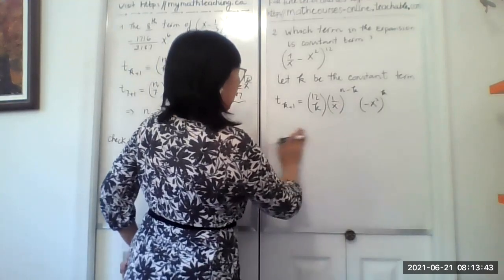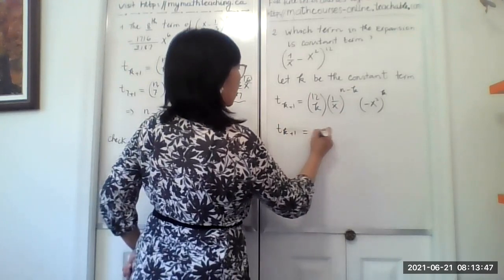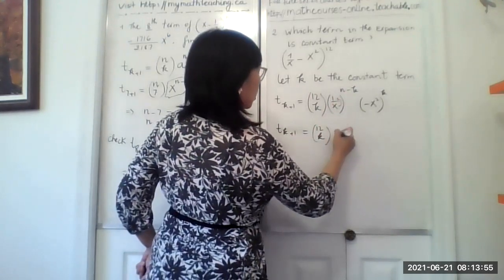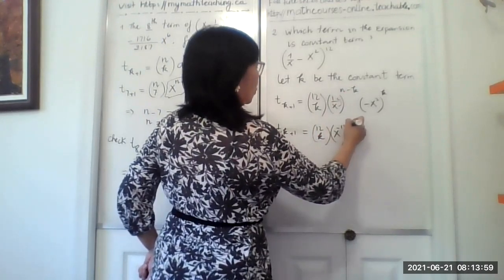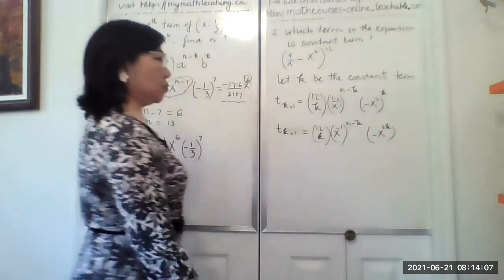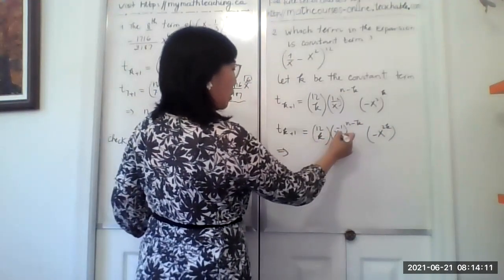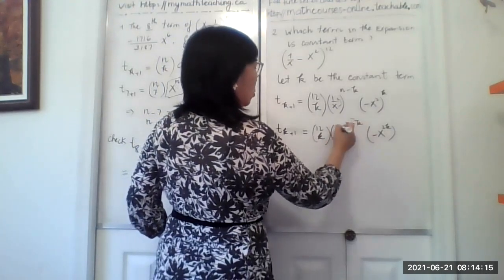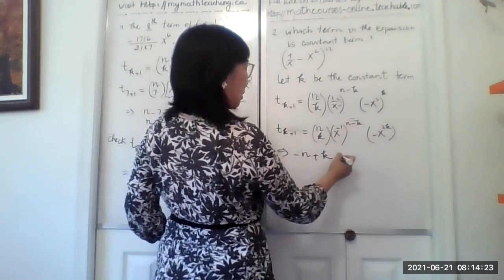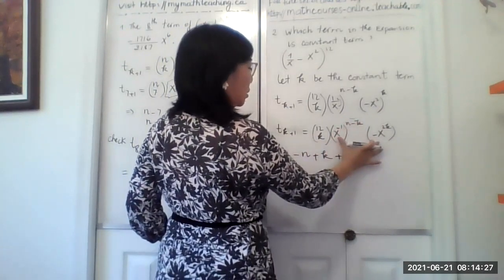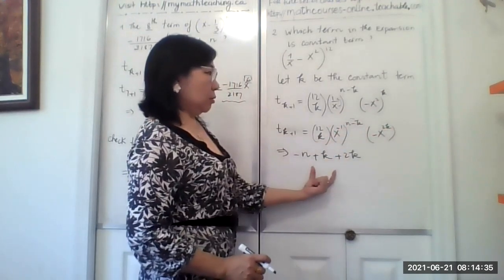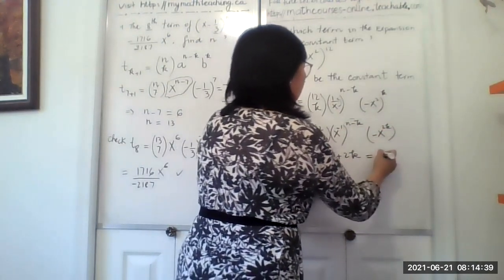So we have n minus k and this is 2k. Keep in mind that I can rewrite this as 12 choose k. I can bring it up but change it to negative power. If we just look at the power here, we will have minus n plus k, because negative times negative is positive, plus 2k. Remember, if we have the same base, the way we multiply, we add the power. So we add this power with this power.